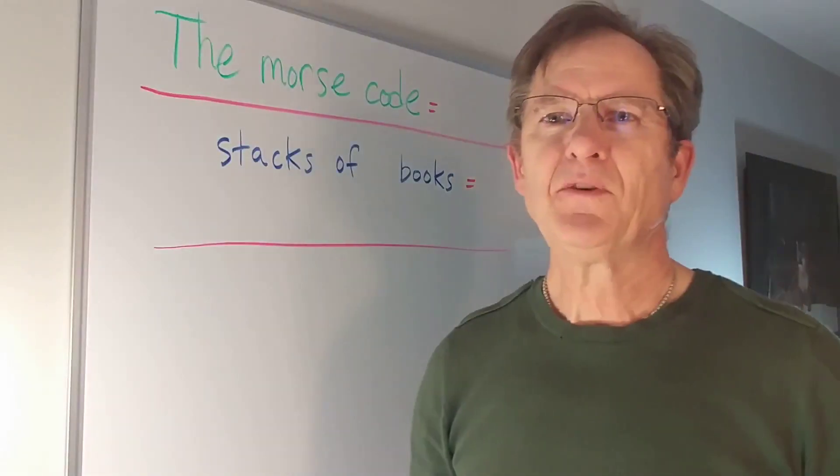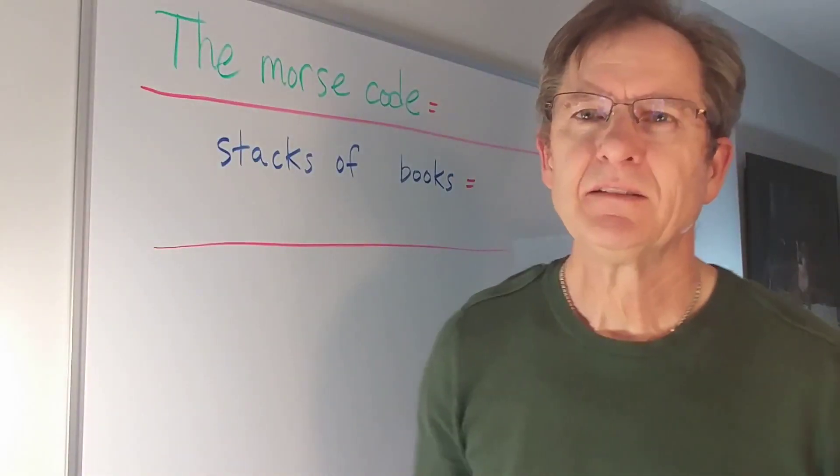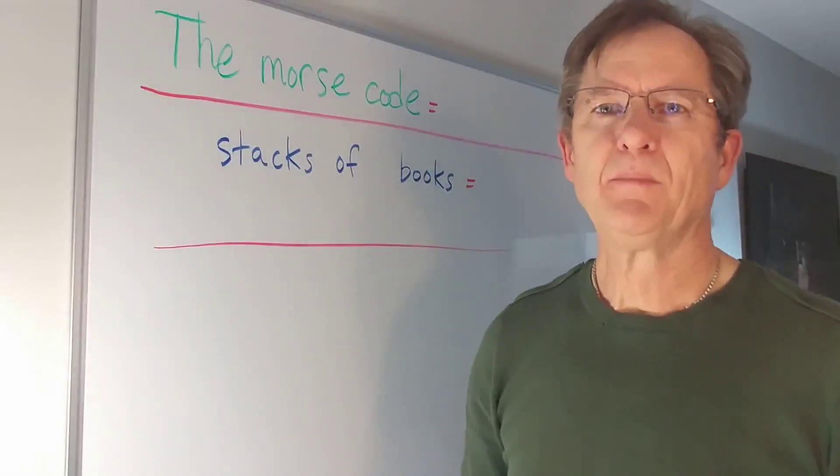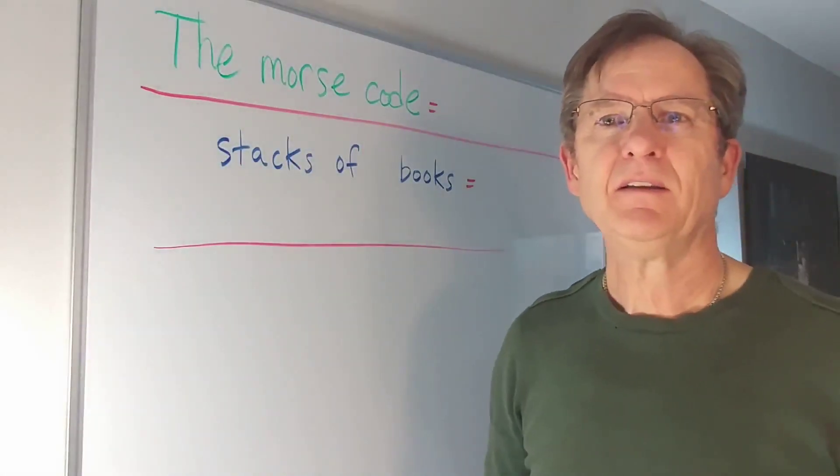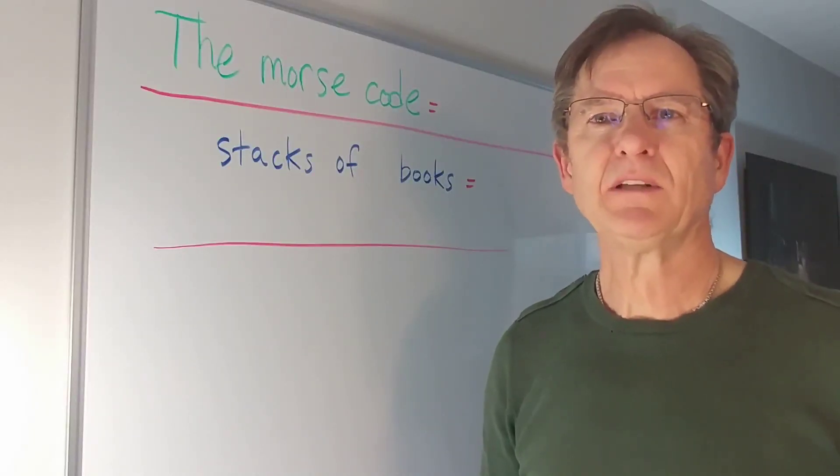Well hello again everybody. Just a few random thoughts for today. Let's start off with one of our anagram puzzles. The Morse code. Book in a spell that's relevant to the Morse code by rearranging those letters.